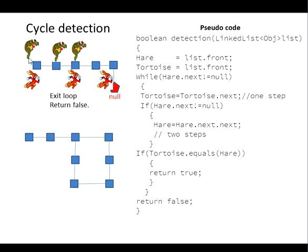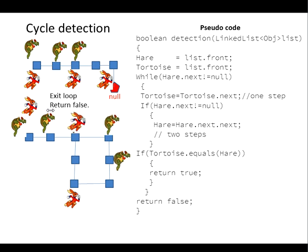Second case: with a loop. Both hare and tortoise start at the beginning and traverse through several loop iterations. Eventually, coincidence occurs — they meet at the same node — and the loop is therefore detected, returning true.